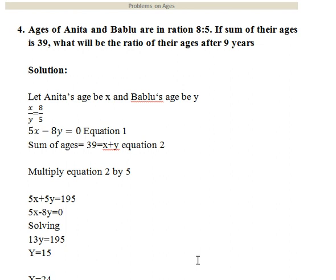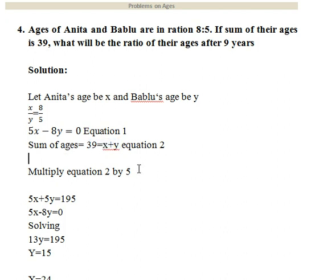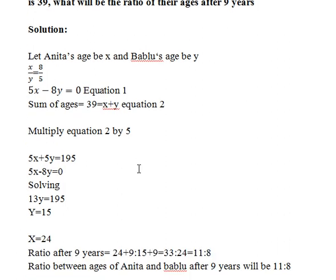Fourth question: Ages of Anita and Bablu are in ratio 8 is to 5. If the sum of their ages is 39, what will be the ratio of their ages after 9 years? Assuming Anita's age as X and Bablu's as Y: X to Y equals 8 to 5 gives equation 1: 5X minus 8Y equals 0. Sum of ages gives equation 2: X plus Y equals 39. Solving gives X equals 24 and Y equals 15.